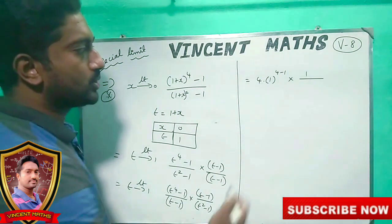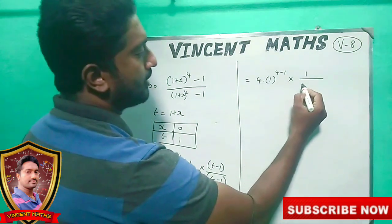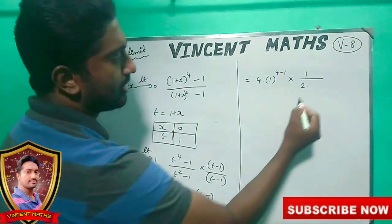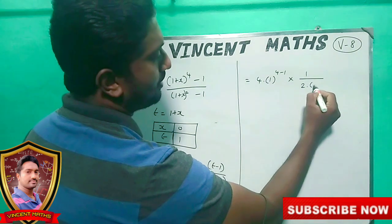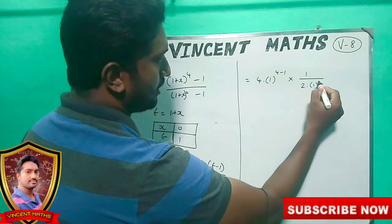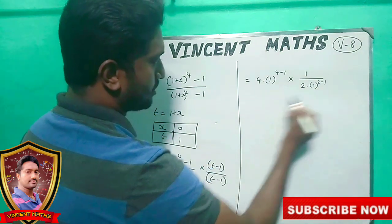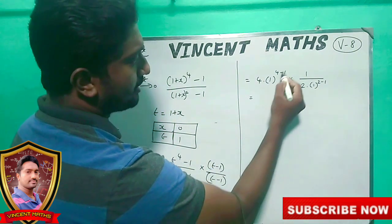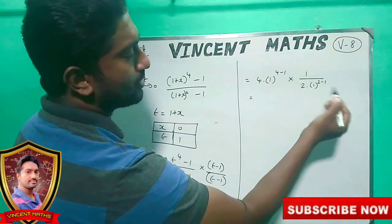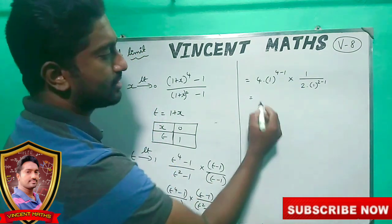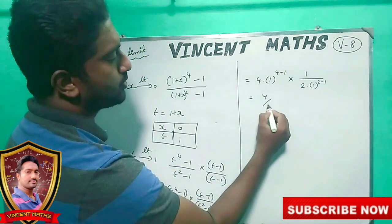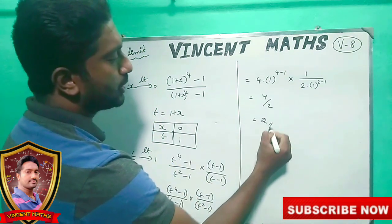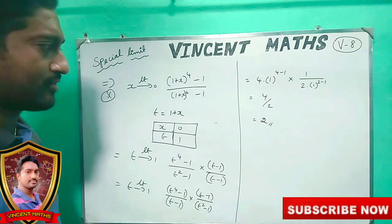If we want to do n value 2, then 2 into a value 1, giving 2 minus 1. Now, we want to do 4 by 2. So, we need to do 4 by 2. It is very easy.